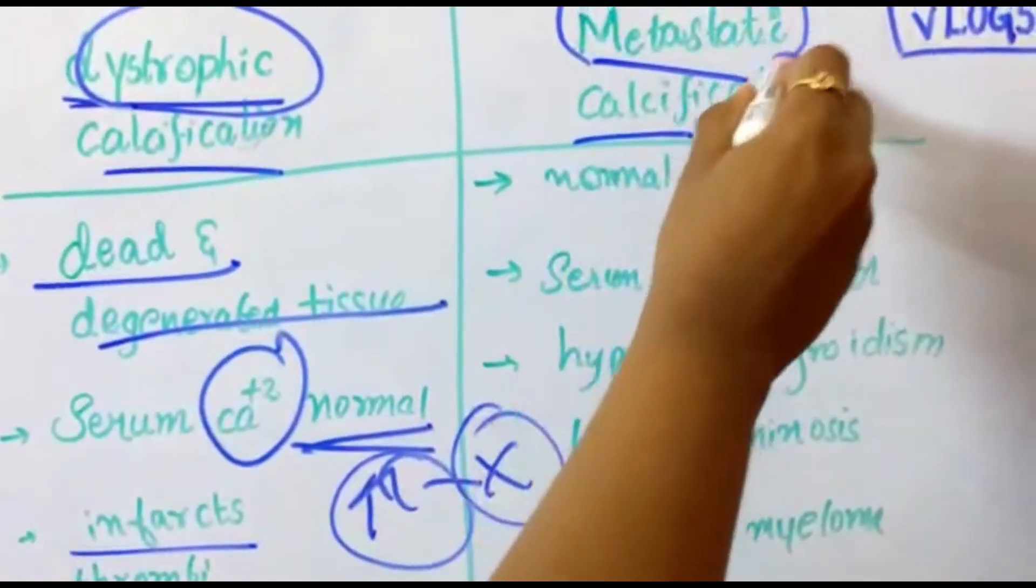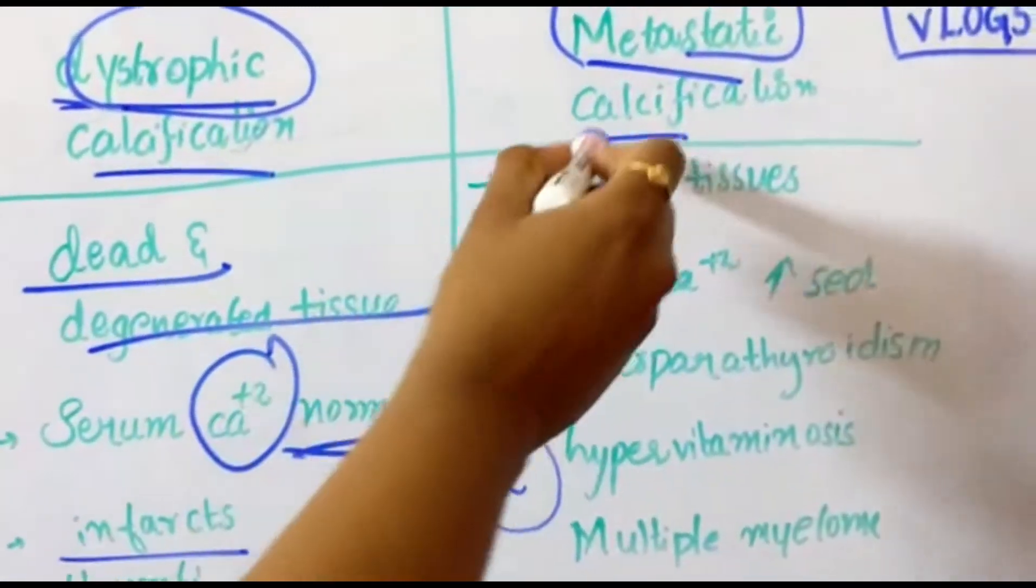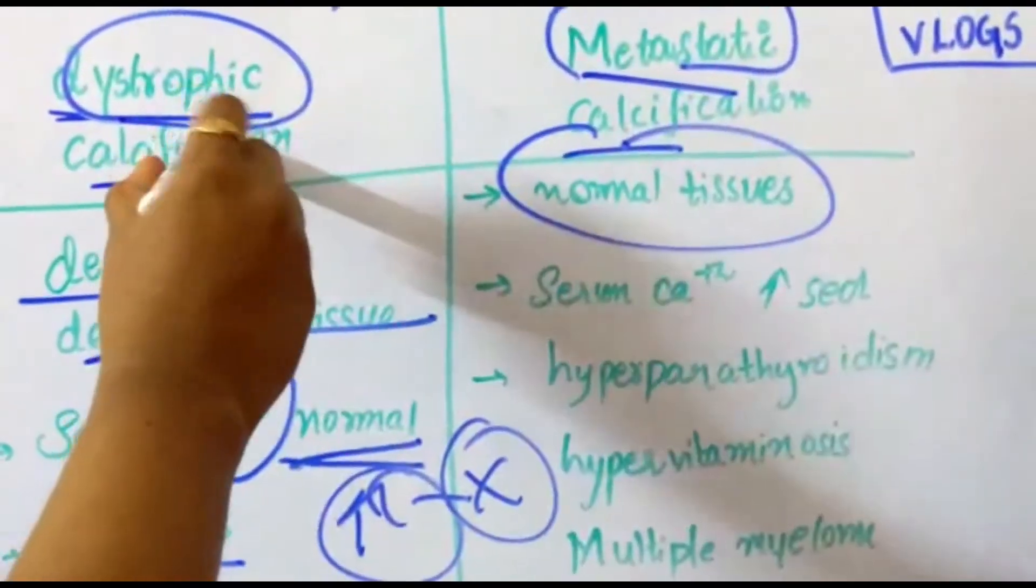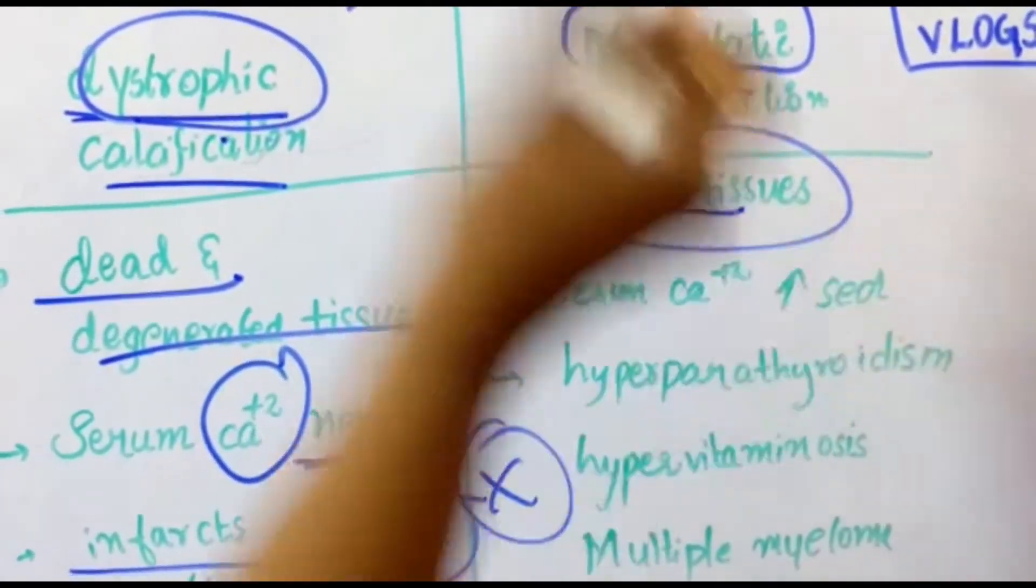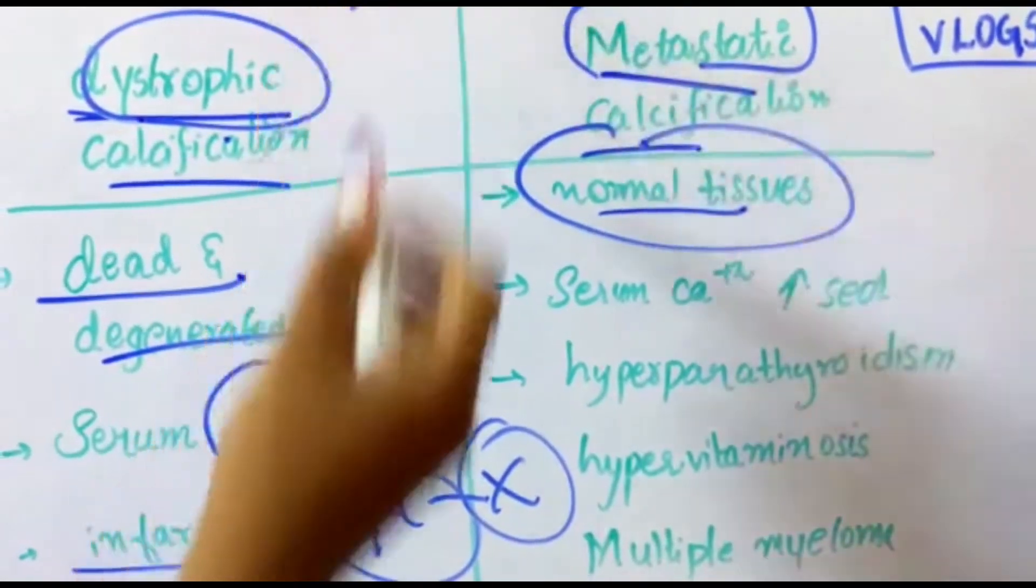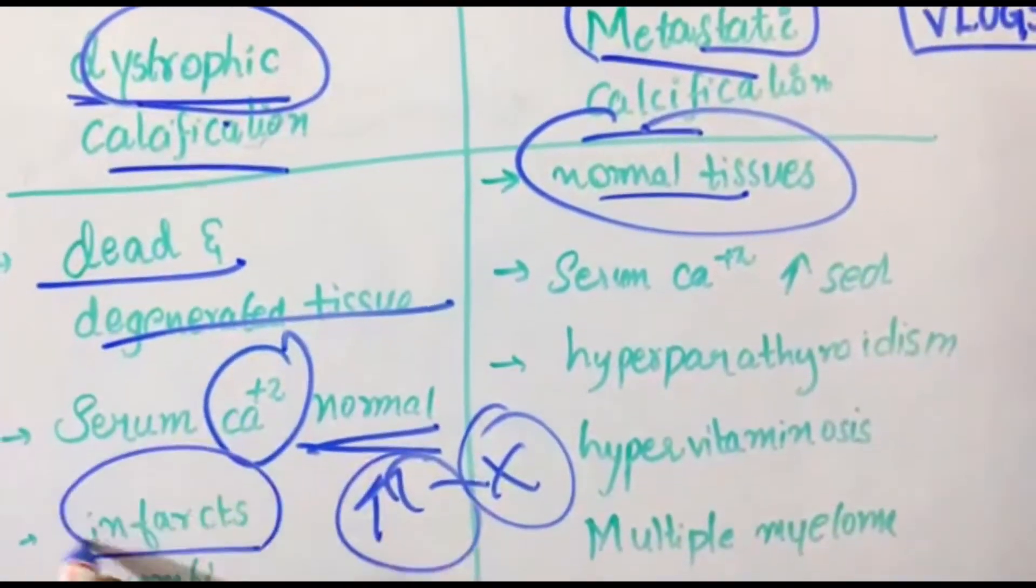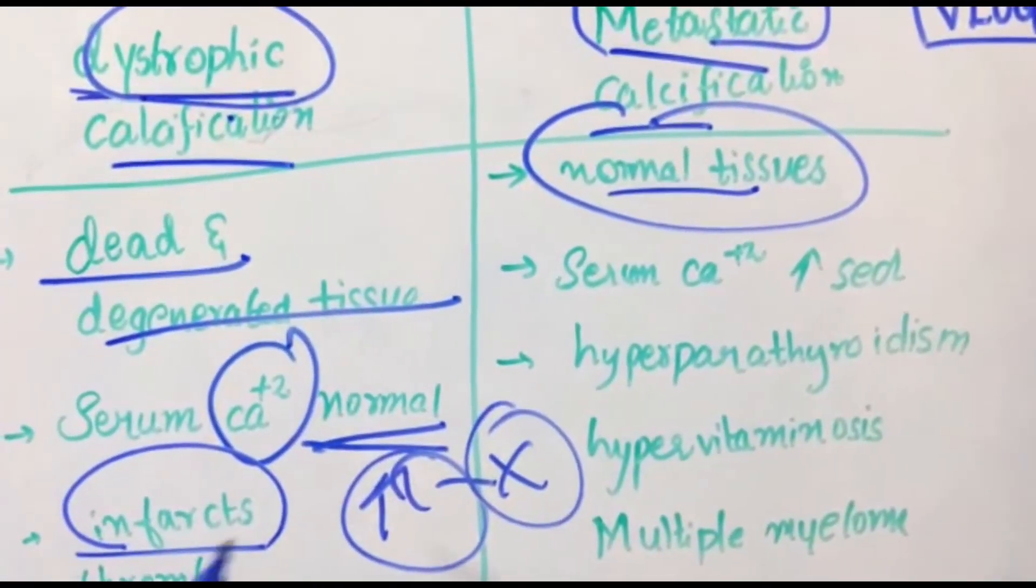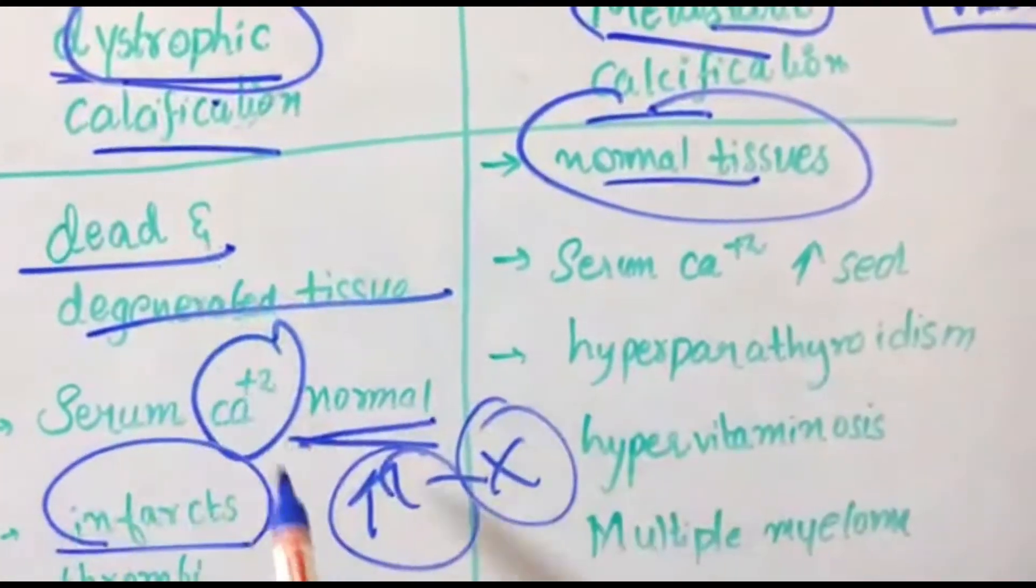Coming to metastatic calcifications, it is seen in normal tissues. Infarction, or deprivation of oxygen leading to dead tissue, is seen in dystrophic calcification.